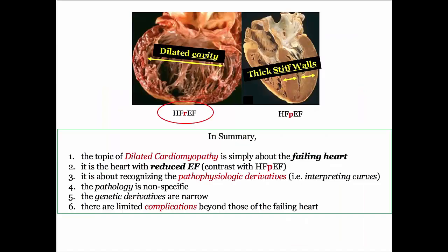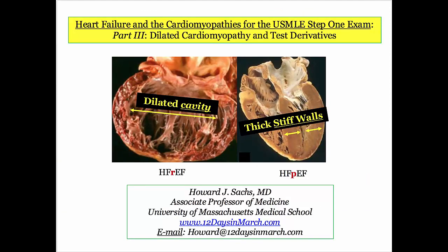Here is dilated cardiomyopathy in a nutshell — we're talking about heart failure with a reduced ejection fraction. Most derivatives are straightforward and simply reflect the failing heart. Pathology and genetic derivatives aren't major targets, and the only complication to be familiar with besides heart failure is mural thrombus. When you return, we'll pick up the discussion of restrictive cardiomyopathy before concluding with the compare and contrast materials. If you have any questions, drop a line in the 12 Days.